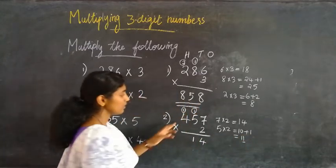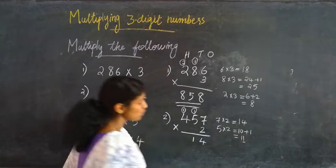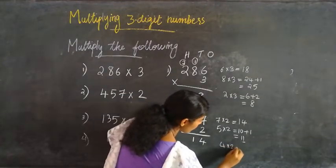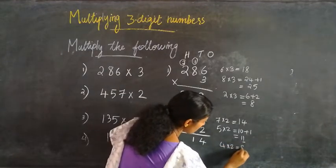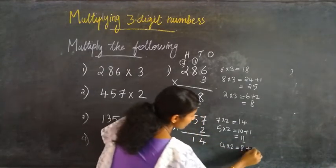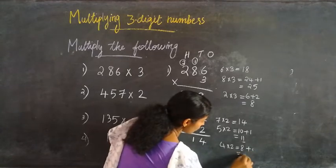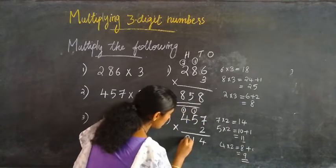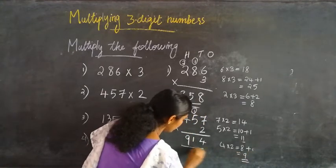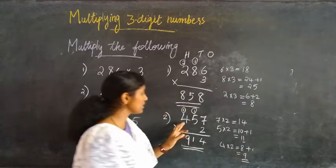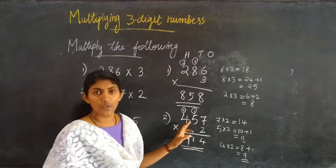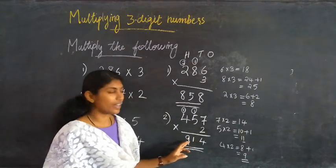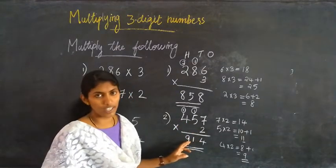Then 4 into 2 equal to 8, plus 1 that is equal to 9. So 457 into 2 equals 914.